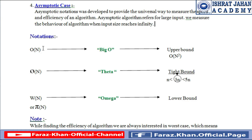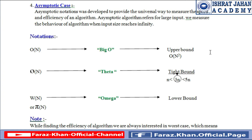The first one is Big O notation. We call it Big O and it represents an upper bound. Whenever we find the key element in a given array at the very last index, we call it an upper bound. The complexity in Big O notation would be O(n²). For example, if we find a key element at the very last index of an array, we call it an upper bound and its complexity would be O(n²).